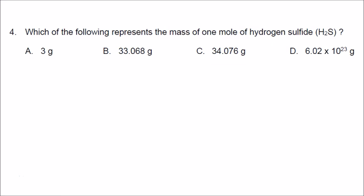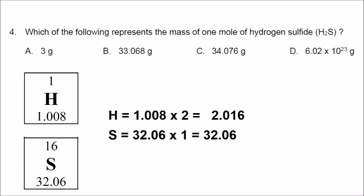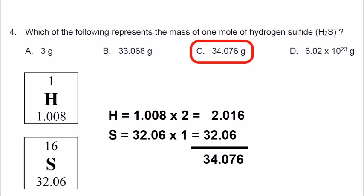Number 4 is a multiple-choice question: which of the following represents the mass of 1 mole of hydrogen sulfide, which has the formula H2S? Since we are dealing with mass, we don't need Avogadro's number — we look at the periodic table. Hydrogen has an atomic mass of 1.008 and sulfur has an atomic mass of 32.06. There are two hydrogens, so we multiply 1.008 by 2, and one sulfur. Adding these numbers together gives 34.076 grams per mole of hydrogen sulfide. The correct answer is C.